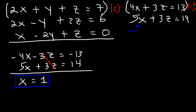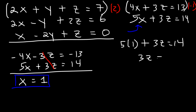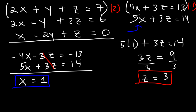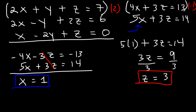Now let's plug x equals 1 into the equation in terms of x and z: 5 times 1 plus 3z equals 14. Subtracting 5 from both sides gives 3z equals 9, and dividing both sides by 3 gives z equals 3.